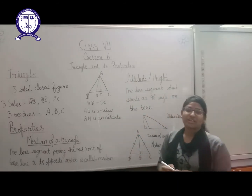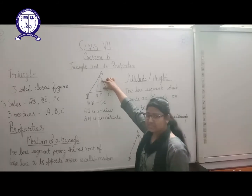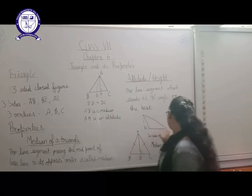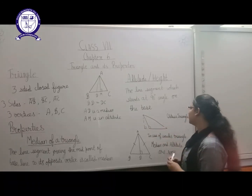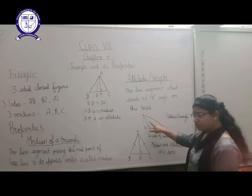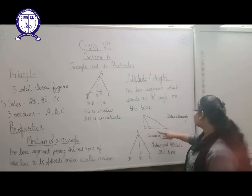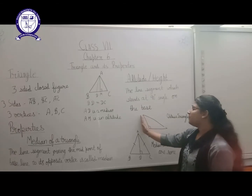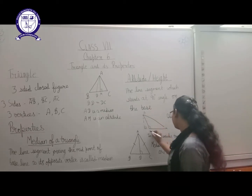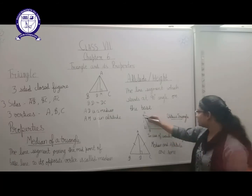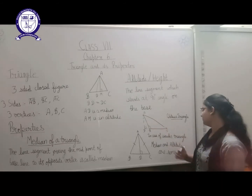Now suppose you have to make an altitude outside the triangle. Here we have made the altitude within the triangle, but if the triangle has an obtuse angle — greater than 90 degrees — it is an obtuse triangle. In that case, by extending the side, we make the altitude outside the triangle. So altitude AD is outside the obtuse triangle ABC.